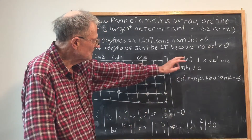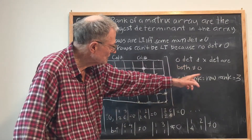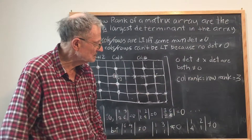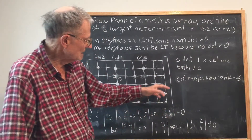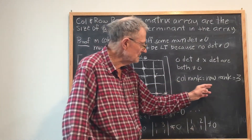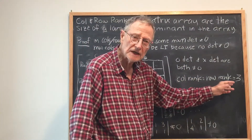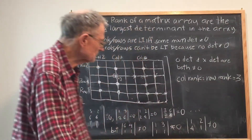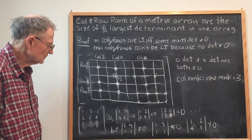So the circle determinant and the cross determinant are both unequal to zero, and the column rank is equal to the row rank, which is equal to 3.